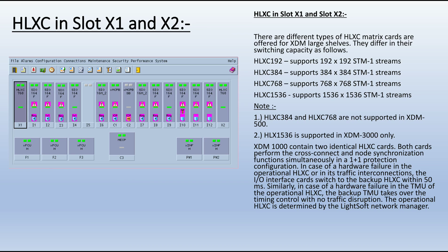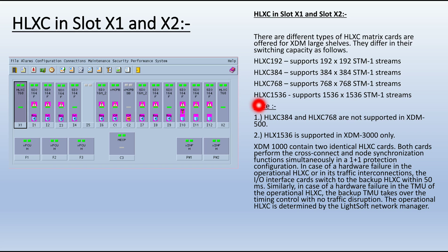Slots X1 and X2 are fixed for the HLXC matrix card. There are different types of HLXC matrix card. They differ in switching capability: HLXC 192, HLXC 384, HLXC 768, and HLXC 1536. The difference between them is only in their switching capability, as mentioned below.